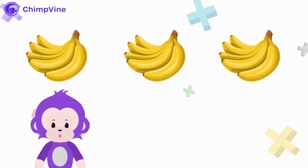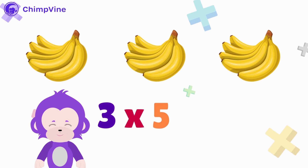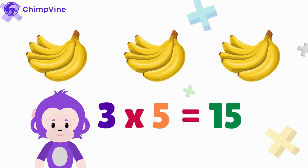First we take the number of bunches, which is three. Then the number of bananas in each bunch, which is five. Now when we put these together using a special symbol called the times sign, it looks like this: three bunches times five bananas. So three times five equals 15 bananas. We have 15 bananas in total. See, it's like magic! Multiplication helps us determine the total number when we have groups of the same thing.